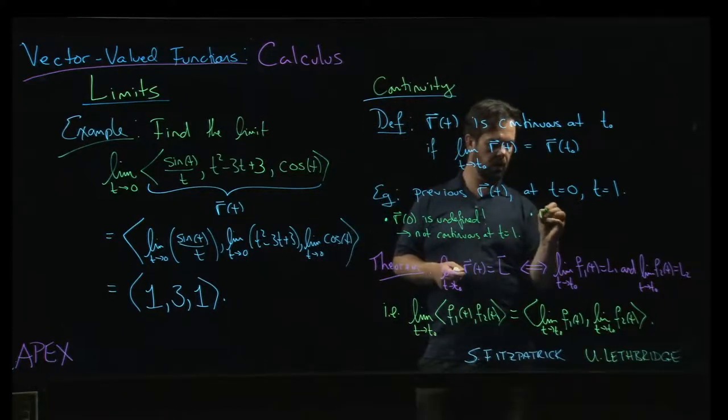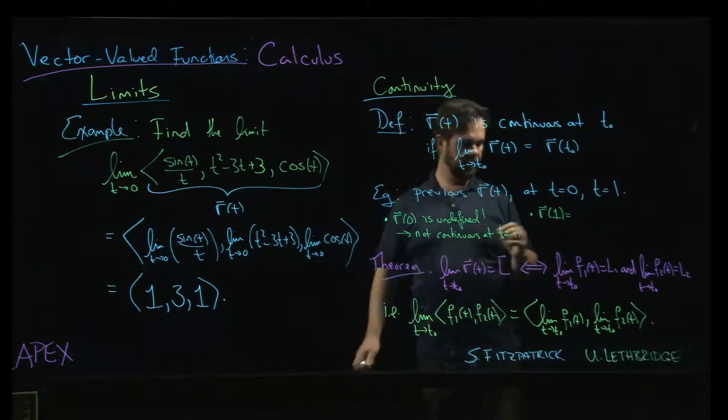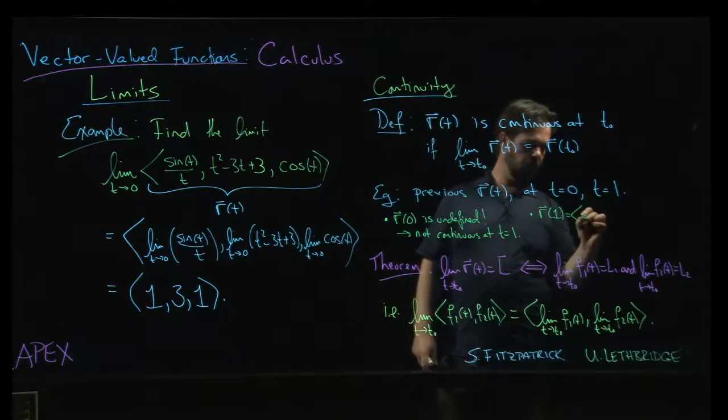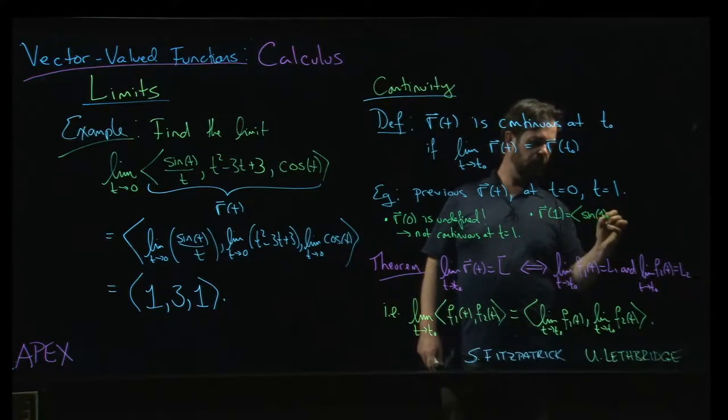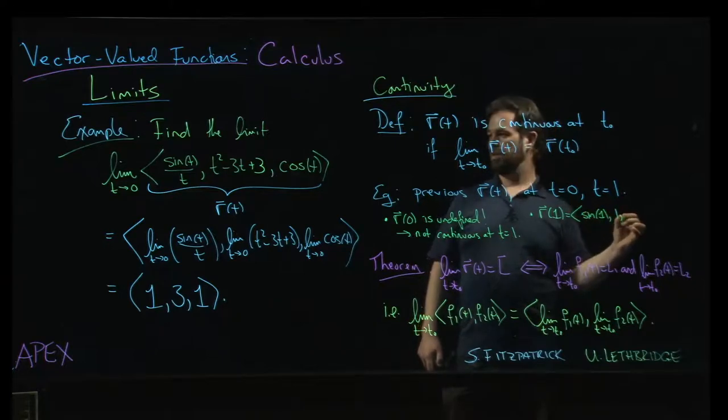But r of 1, well, I can just plug t equals 1 in. I'm going to get sine of 1, I'm going to get 1, and then I'm going to get cosine of 1.